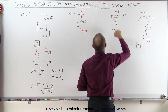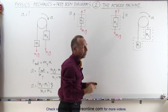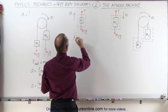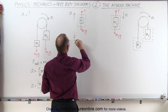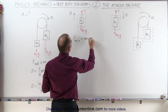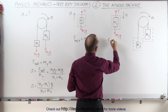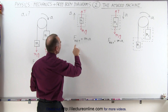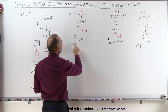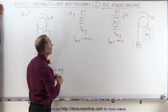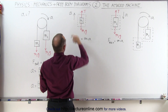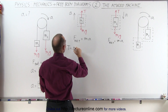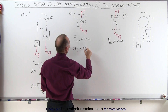Relative to M2, the acceleration is downward. Relative to M1, the acceleration is upward. We set up equations of F equals MA for both free-body diagrams. The net force is all the forces aiding minus all the forces opposing the acceleration. For M1, the force aiding is T — in the same direction as the upward acceleration — minus M1g, which opposes it, and that equals M1 times A.